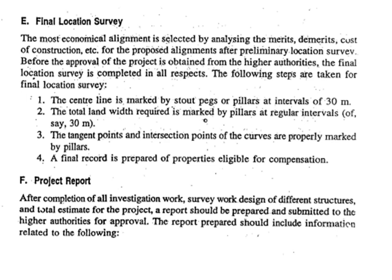In the final location survey, the most economical alignment is selected by analyzing the merits, demerits, and cost of construction for the proposed alignment after the preliminary location survey, before approval from higher authorities. The following steps are taken: the center line is marked by stakes, pegs, or pillars at intervals of 30 meters; the total land width required is marked by pillars at regular intervals of 30 meters; the tangent points and intersection points of curves are properly marked by pillars; and a final record is prepared for properties eligible for compensation.